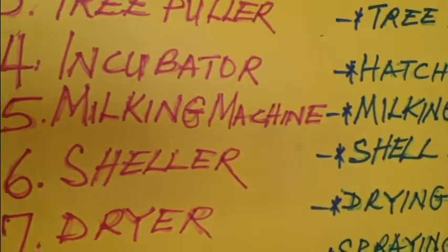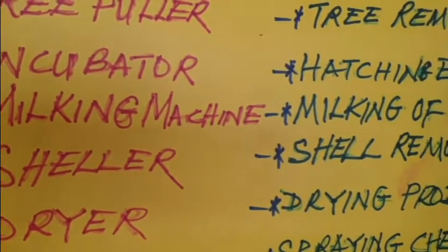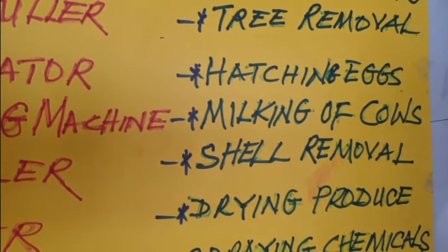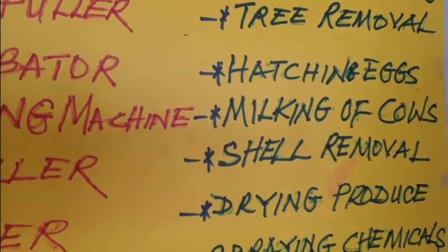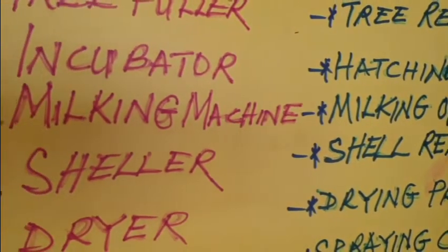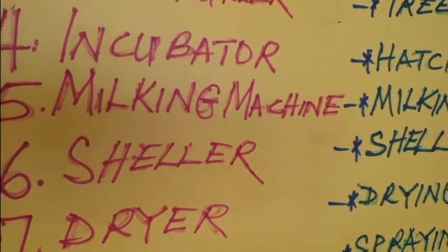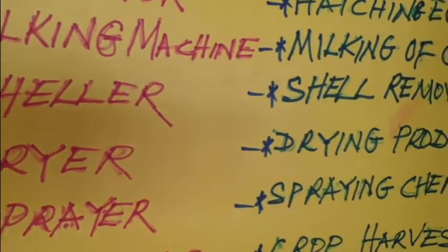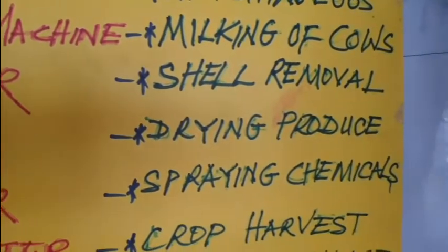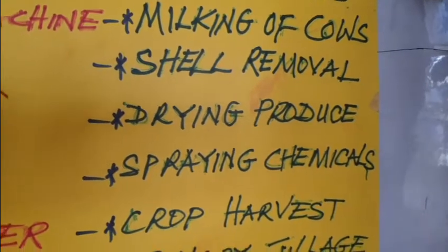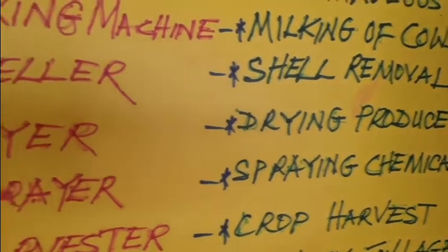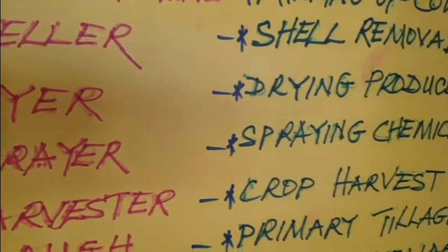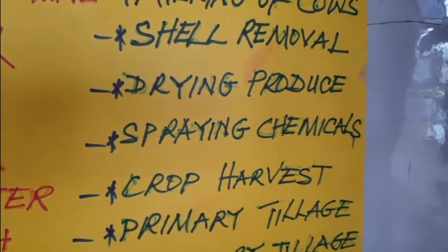Number five is the milking machine. It's used for milking of cows — that is, extraction of milk hygienically and in a medically standard way from the cow. Number six is the sheller, used for shell removal of crops like groundnuts, pigeon peas, soybeans, and beans. Number seven is the dryer, used for drying of farm produce. Number eight is the sprayer, used for spraying chemicals on the farm like insecticides, pesticides, and liquid fertilizer.